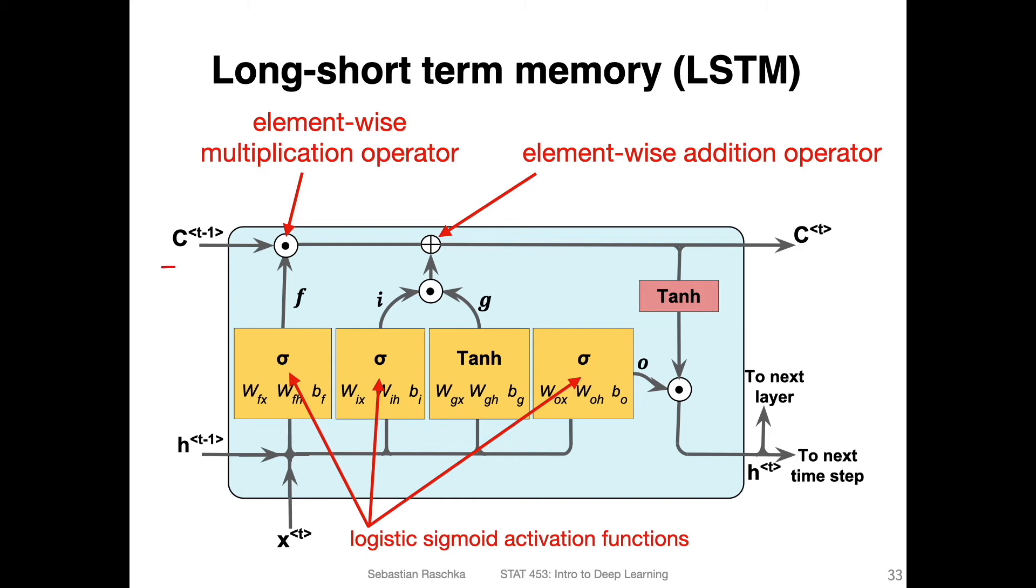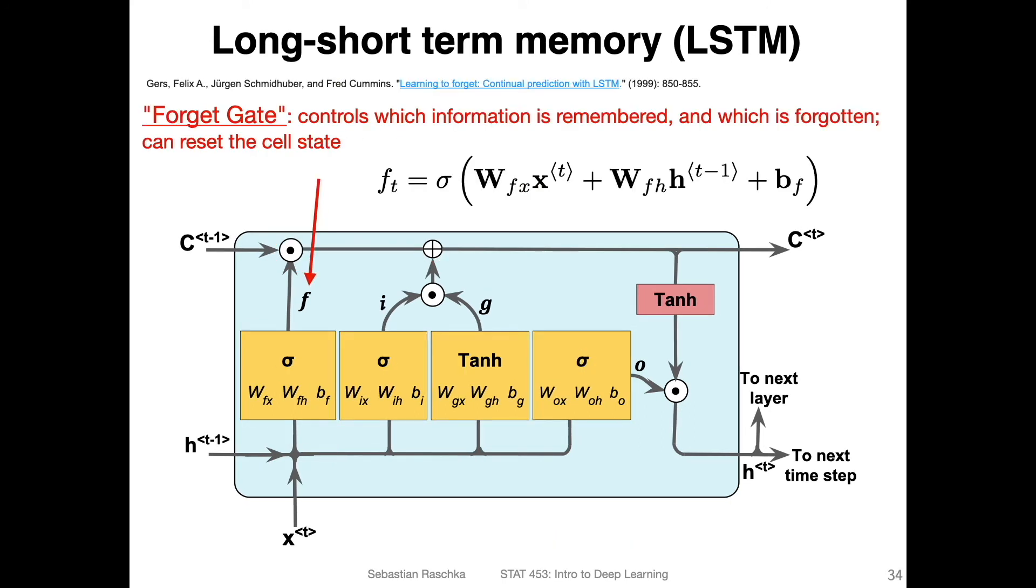Then here, mainly for the memory, for the cell state, we have two different operations. We have here the element-wise multiplication, here we have an addition. And these sigmas here represent logistic sigmoid activation functions. Now we have three different gates.